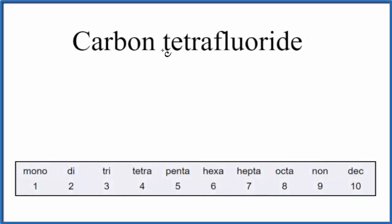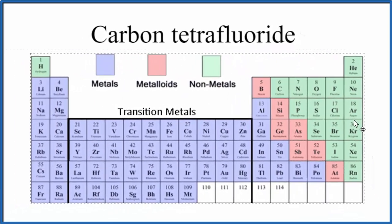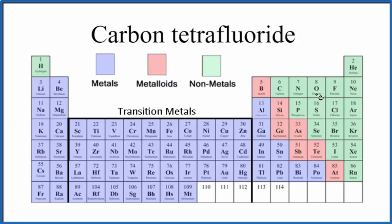To write the formula for carbon tetrafluoride, we first need to figure out what type of compound we have. If we look at the periodic table here, carbon right here and then fluorine, they're both nonmetals. When we have two nonmetals, we have a molecular, also called covalent compound.